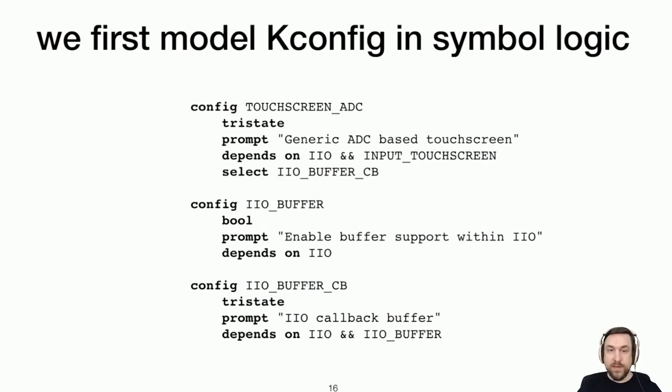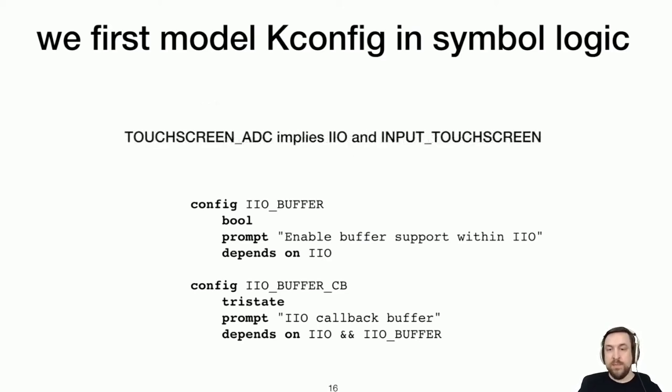So our first step to doing this is to model the kconfig language as symbolic Boolean logic. And the way we do this is we turn, for instance, the dependencies that touchscreen ADC has on other options into its equivalent Boolean formula. In this case, touchscreen ADC can only be enabled if its direct dependencies IIO and input touchscreen are also turned on. So we model that in logic by saying that, well, if touchscreen ADC is turned on, that implies that IIO and input touchscreen must have also been turned on.